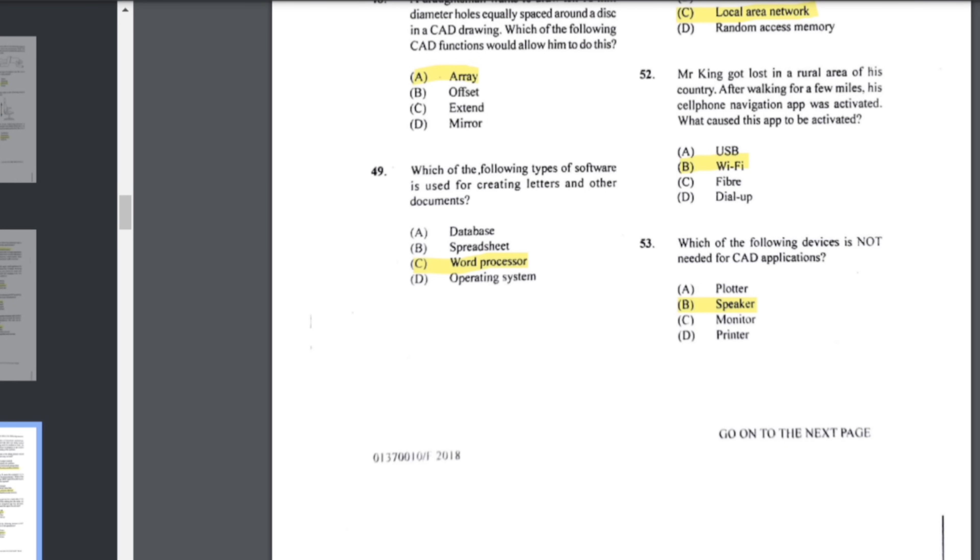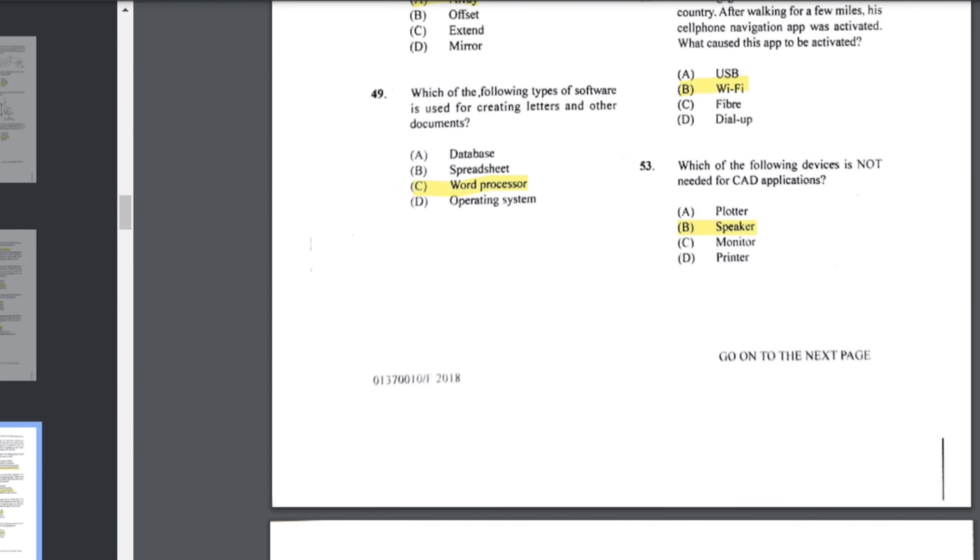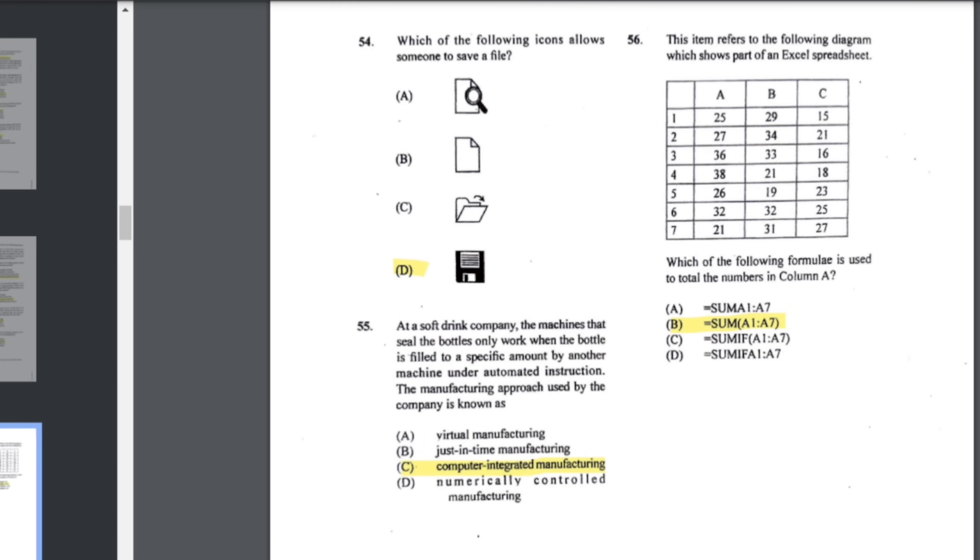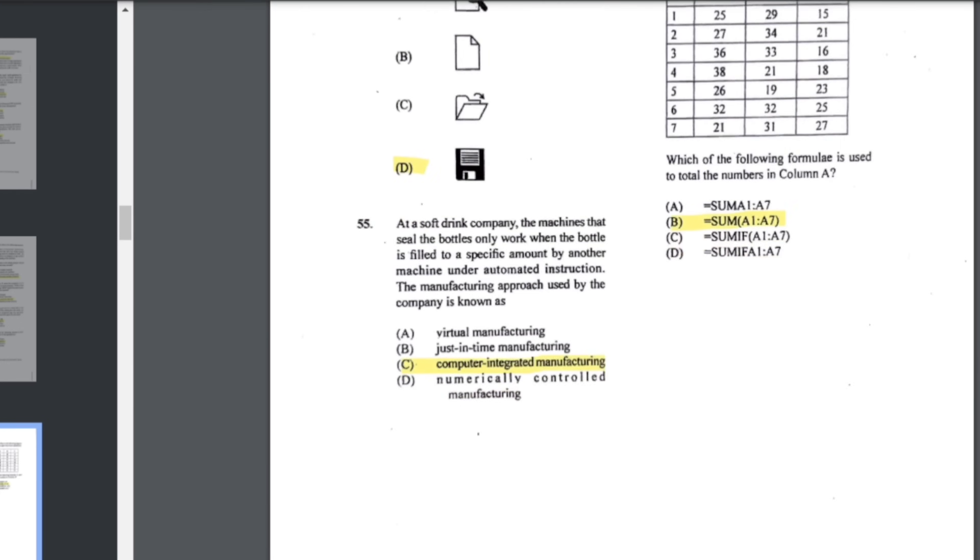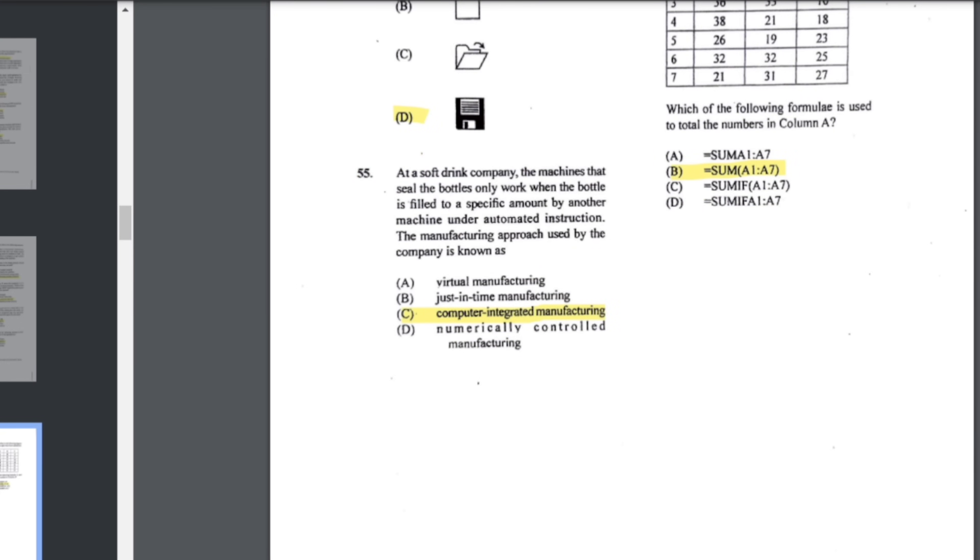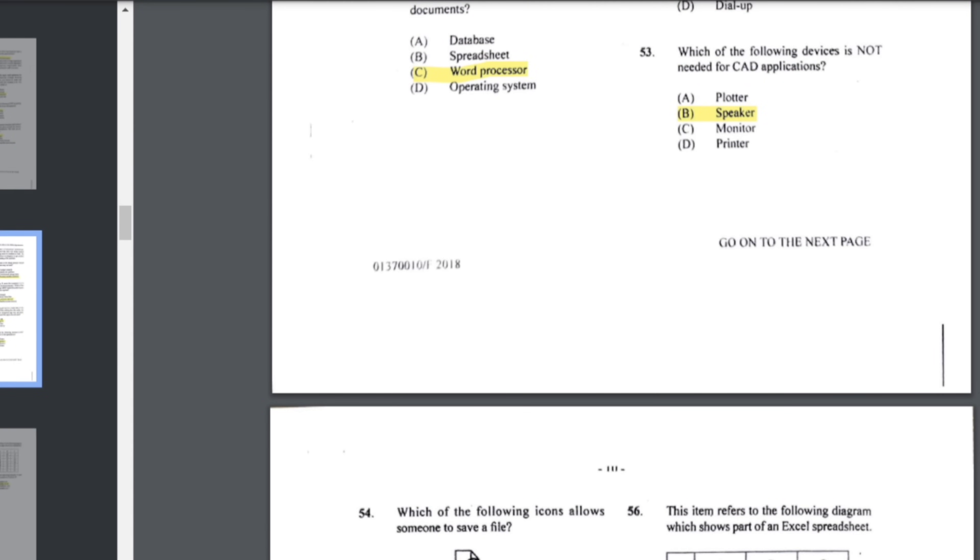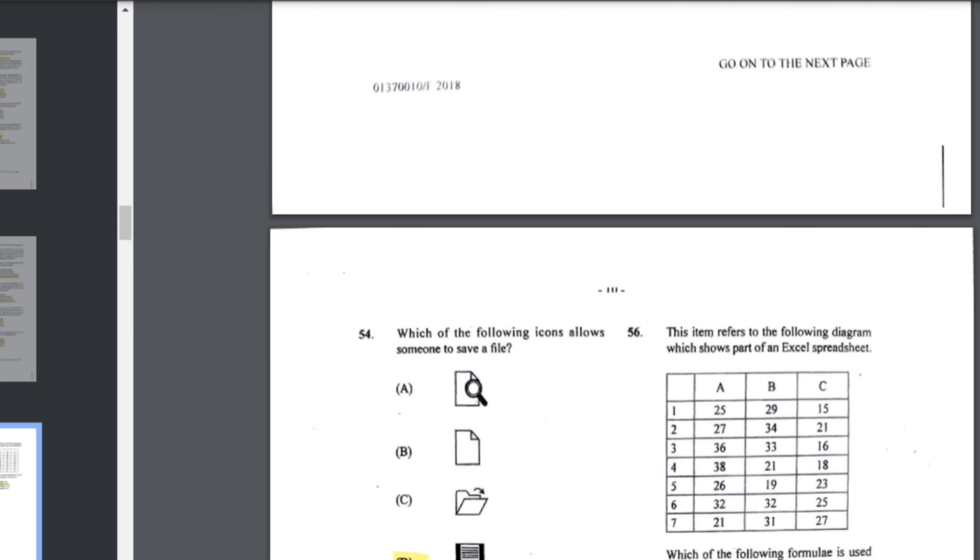Number 51: Company B wants the computers in the office to be interconnected. Which of the following is best suited for achieving the connection required? LAN, local area network. Number 52: Mr. King at last in a rural area of his country, after walking for a few miles his cell phone navigation app was activated. What caused this to be activated? This would be WiFi. Number 53: which of the following devices is not needed for CAD applications? You don't need a speaker for AutoCAD. Number 54: which of the following icons allow someone to save a file? That would be D, the one that looks like a floppy disk. Number 55: at a soft drink company, the machines that seal the bottles only work when the bottle is filled to a specific amount by another machine under automated instruction. The manufacturing approach used by the company is known as computer integrated manufacturing.